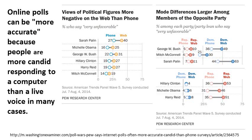Online polls can be more accurate because people are more candid when responding to a computer rather than a live voice — after all, a computer is non-judgmental. There is some evidence that the difference can represent just a small margin of error of only a percent or two, but it could also mean a significant point spread of 20% or more. When people are on the phone, they may just be inclined to complete the survey without much thought — they just want to get off the phone — whereas if a person is online, they may be more inclined to give each question a degree of deeper thought and consideration.